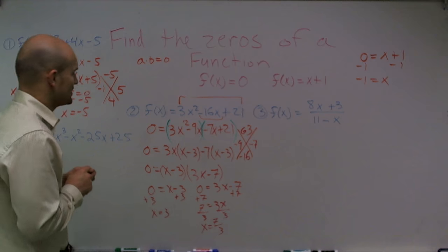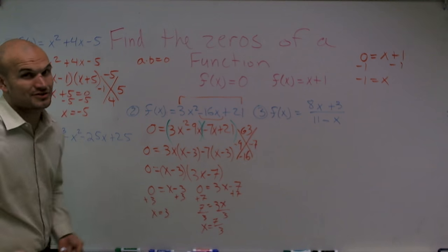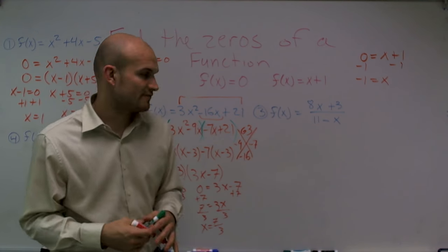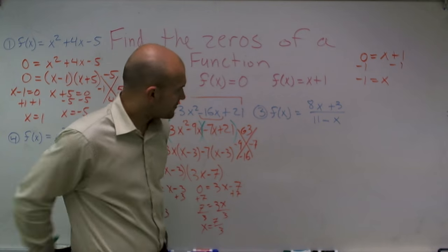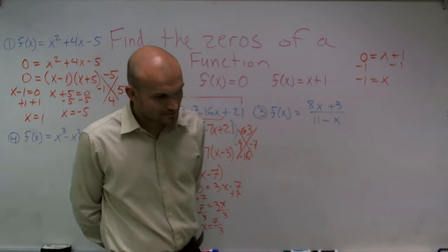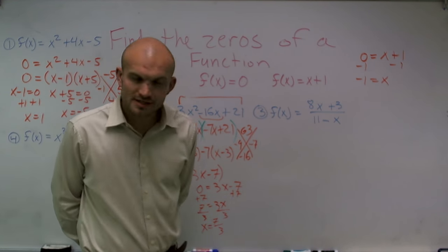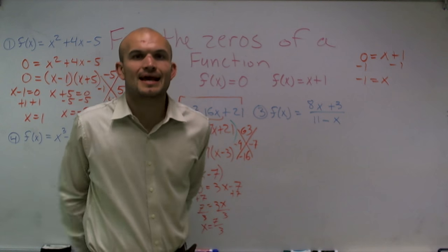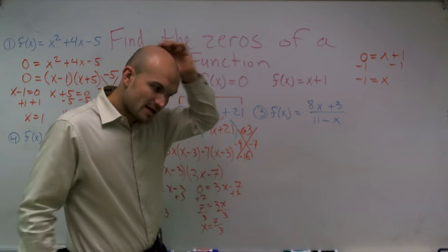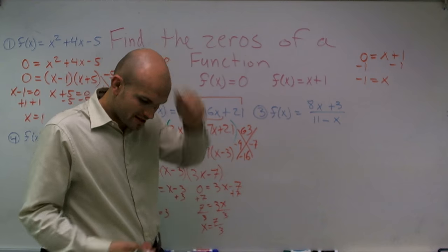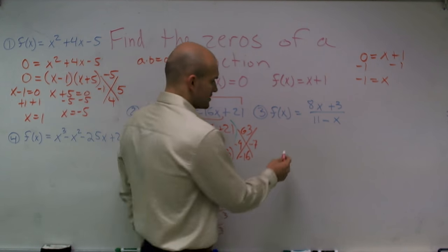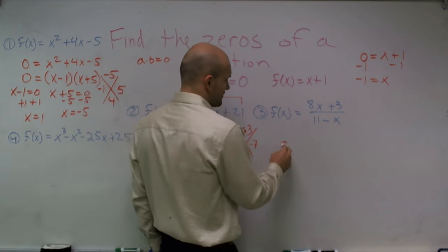That's a quick review on factoring — when finding zeros, you really have to be good at your factoring. Number 3 is what we call a rational function, and this one trips students up because they hate fractions. But if we remember — who cares about the fraction? Let's just do what we know how to do, which is put 0 for f of x.